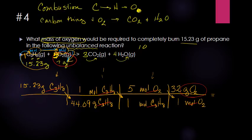For the moles-to-grams step, we use the molar mass again: one mole of O2 is 32 grams. Multiply everything across the top, then divide by 44.09, and you end up with 55.27 grams of oxygen. The last step is to check your significant figures — in this case there are four significant figures given, so we should have four significant figures in our final answer.